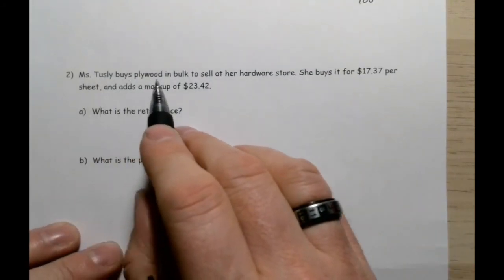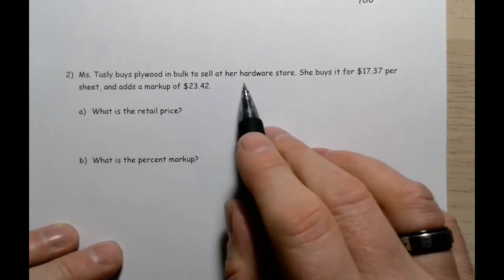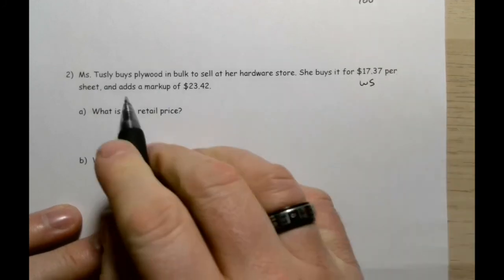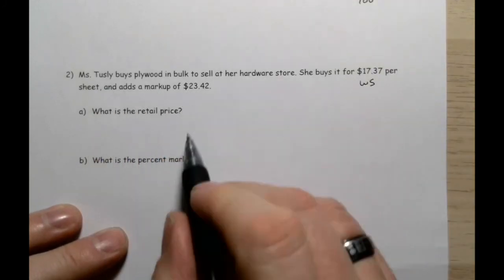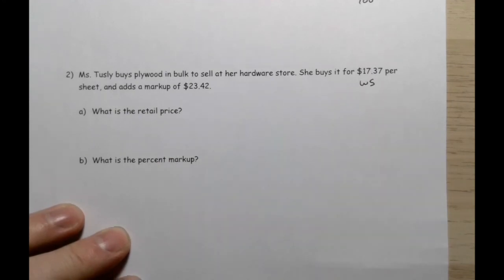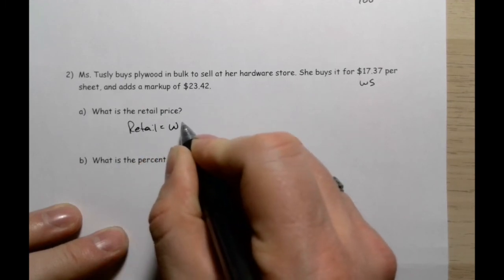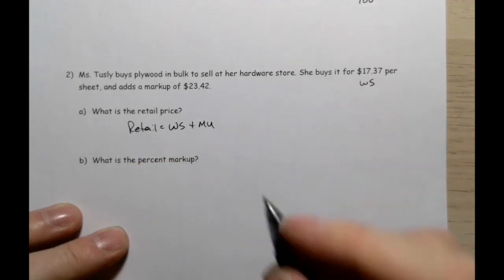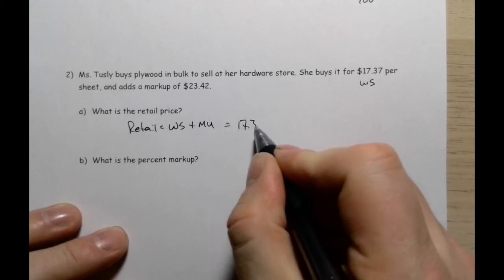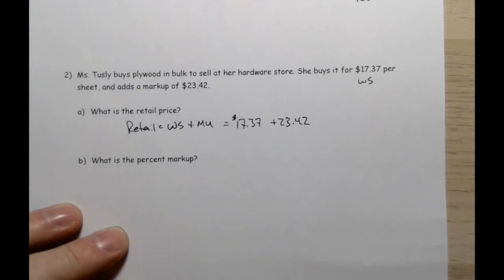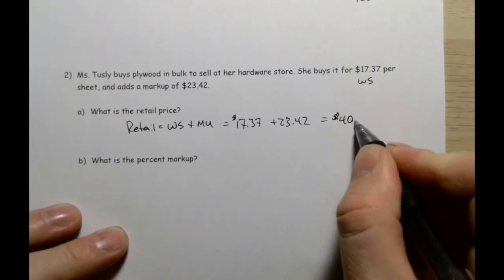Ms. Tussley buys plywood in bulk to sell at her hardware store. She buys it for $17.37 per sheet - that is wholesale. And adds a markup of $23.42. So first, what is the retail price? Retail is going to be wholesale plus markup. $17.37 plus $23.42. So she is selling it for $40.79.